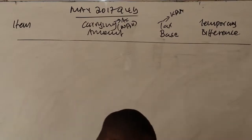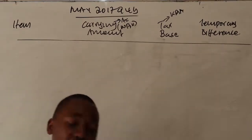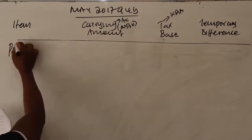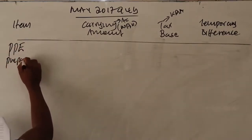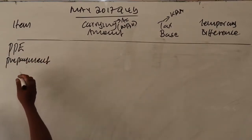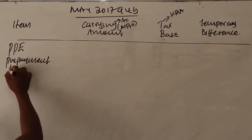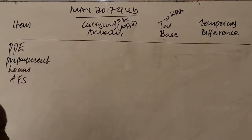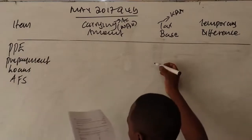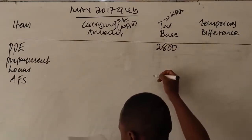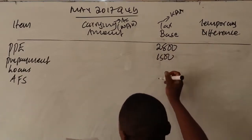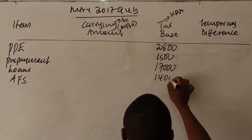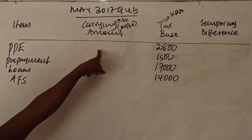From additional information number one, we are given the tax bases of assets: PPE = 2,800; prepayment = 1,500; interest-bearing borrowings = 17,000; financial assets available for sale = 14,000. The carrying amounts come from the statement of financial position: PPE = 14,000; prepayment = 2,000 (current assets); interest-bearing loans = 16,000 (non-current liability); financial assets available for sale = 12,000.